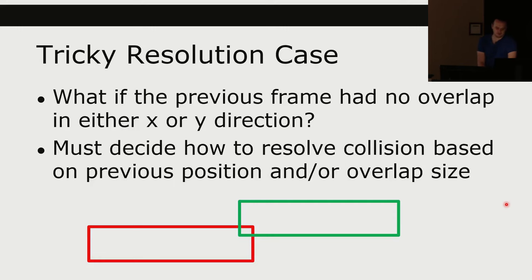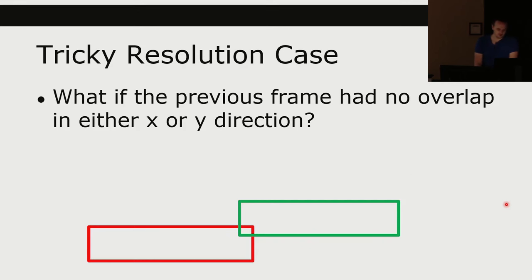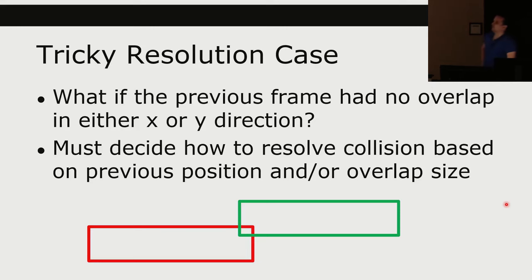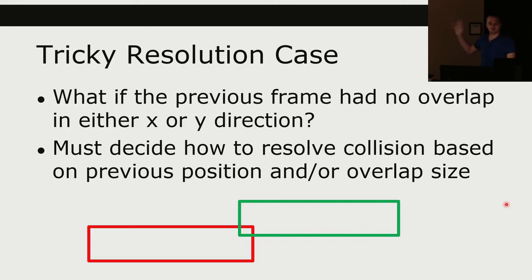There's still another case: what if the previous frame had no overlap — it came in from a diagonal? This is a tricky case, and you must decide on some sort of priority. You must decide how to resolve this collision based on the previous position and/or overlap size. For example, you might say: resolve all diagonal collisions by pushing up, or push up by the entire overlap so it lands on the corner, or if the x value is greater than the y value, it collides with the side.